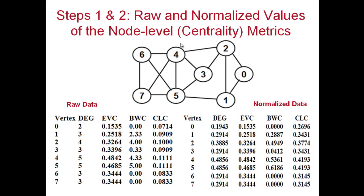A centrality metrics jar file is provided that will generate the raw data. You can then normalize the individual centrality metrics to generate normalized data. Note that eigenvector centrality is already normalized, so the normalized data for eigenvector centrality is the same as the raw data — that is a property of eigenvector centrality.